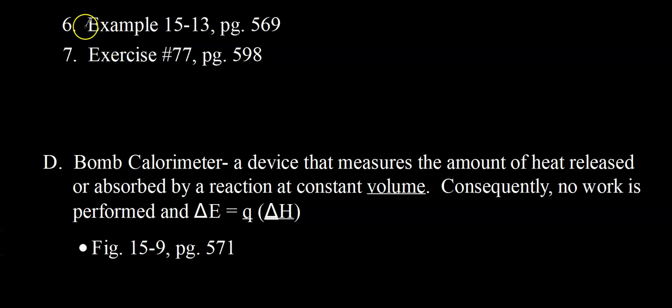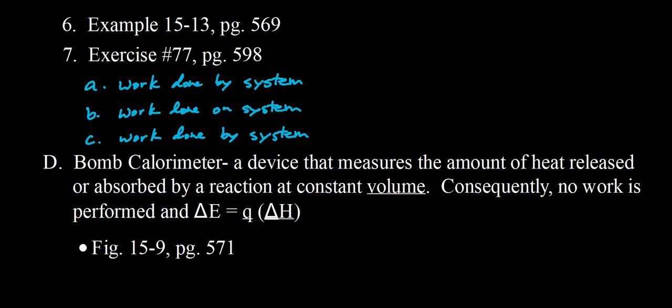Go ahead and try number 77 on page 598. For letter A, we're going from a liquid to a gas, so moles of gaseous substances increase, volume increases, and work is being done by the system on the surroundings. For letter B, we have 2 moles of gaseous reactants and 1 mole of gaseous products, leading to a decrease in total volume — work is being done on the system by the surroundings. For letter C, we have zero moles of gaseous reactants and 2 moles of gaseous products, leading to an increase in volume — work is done by the system on the surroundings.